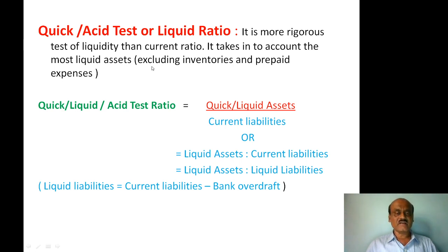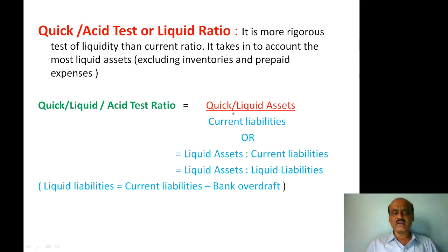Current assets include: prepaid expenses, debtors, bills receivable, bank, and cash balance. If inventory and prepaid expenses are excluded from current assets, the remaining are liquid assets. The formula for the liquid ratio or acid test ratio is: quick or liquid assets divided by current liabilities.